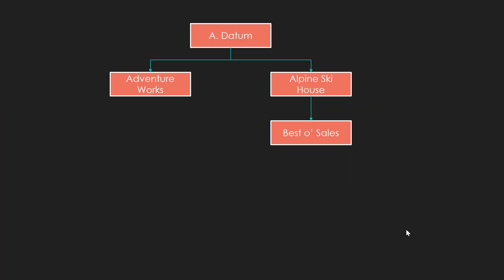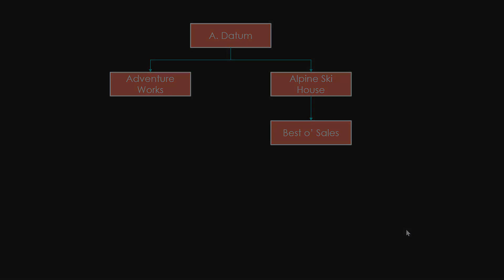To understand this concept, in Dynamics 365 we have taken several accounts. For example, AdventureWorks has a parent account called Adatum. Also, the Alpine Ski House account has a parent account called Adatum, whereas the Best of Sales account has a parent account called Alpine Ski House. So this is the hierarchical structure that we'll try to see in Dynamics 365.